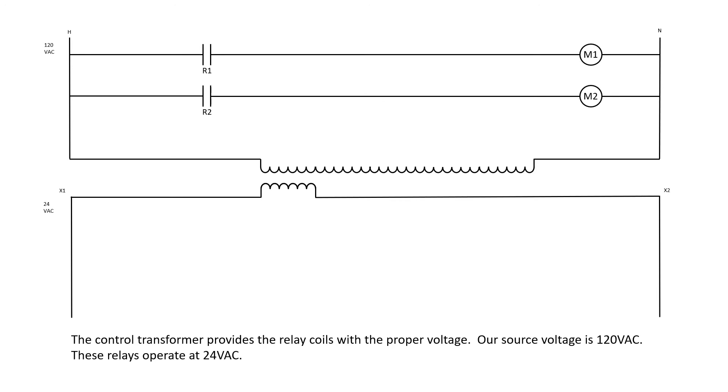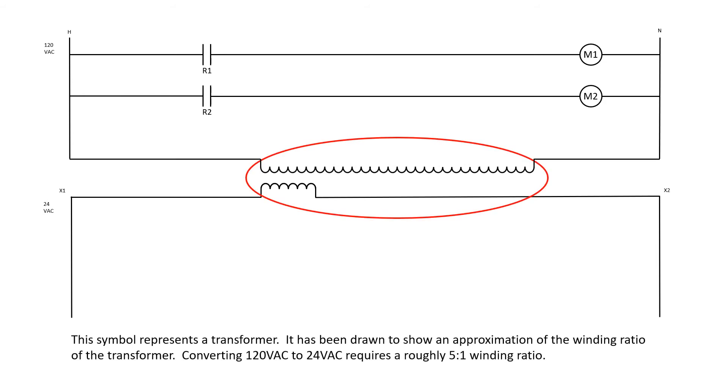Our source voltage is 120 volts. These relays operate at 24 volts. This symbol represents a transformer. It has been drawn to show an approximation of the winding ratio of the transformer. Converting 120 volts to 24 volts requires a roughly 5 to 1 winding ratio.